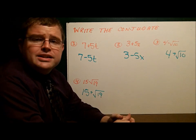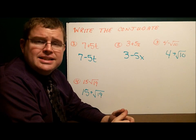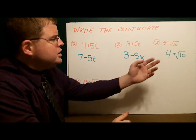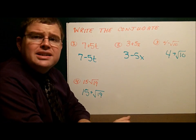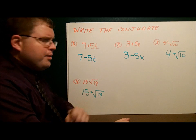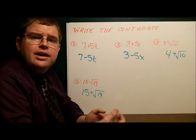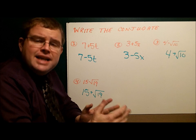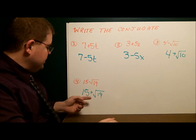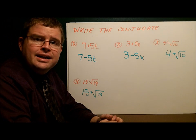For 4 minus the square root of 10, the conjugate has the same numbers but the opposite operation, giving us 4 plus the square root of 10. Similarly, 15 minus the square root of 19 — conjugate means same numbers, opposite operation — so it's 15 plus the square root of 19.